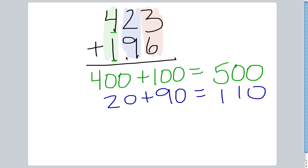Our last part in red is our ones place. Here we have 3 ones plus 6 ones, which gives us 9 ones.